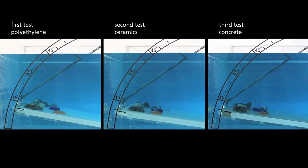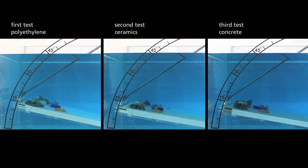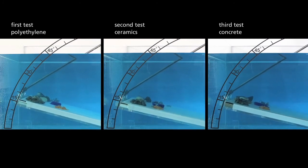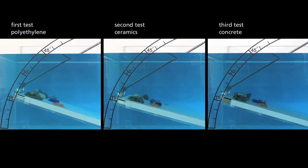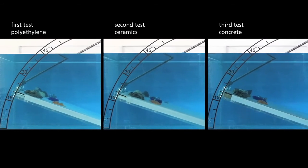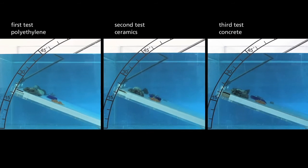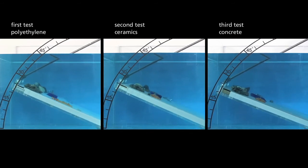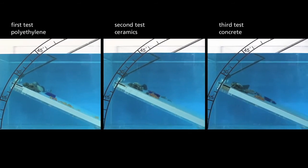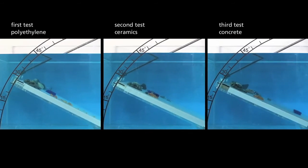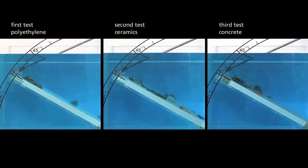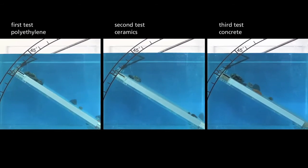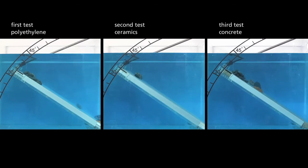When we perform the three parts of the test at the same time, we clearly notice that the specimens start sliding at a much smaller angle when they are placed on a smooth polyethylene surface than on any of the other surfaces. Smooth polyethylene surfaces prevent deposits of rough materials, even at inclined angles below 40 degrees.